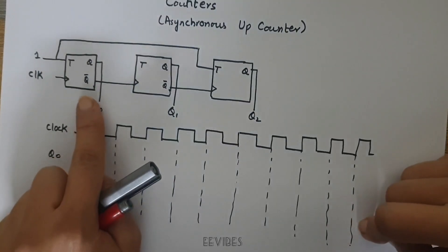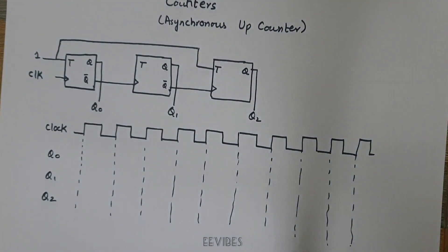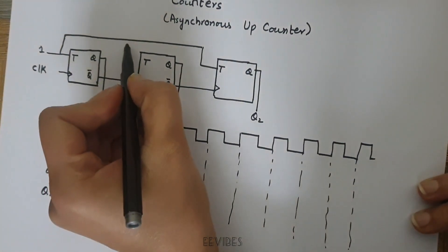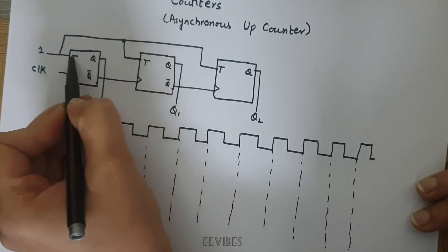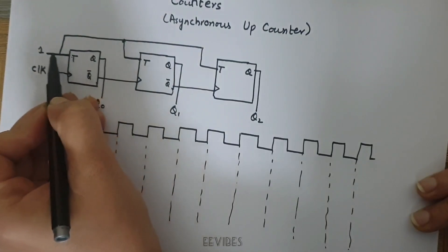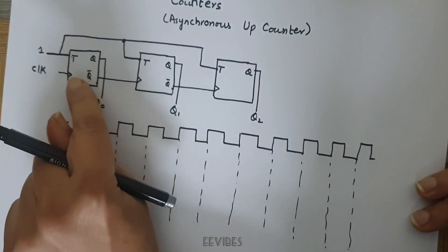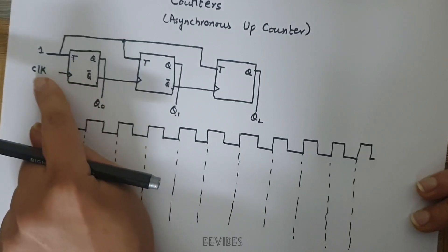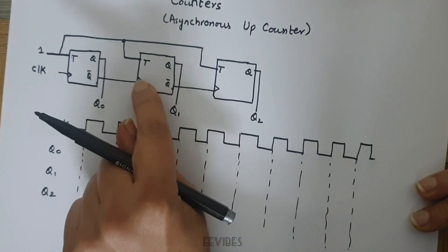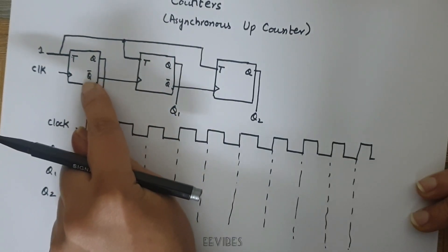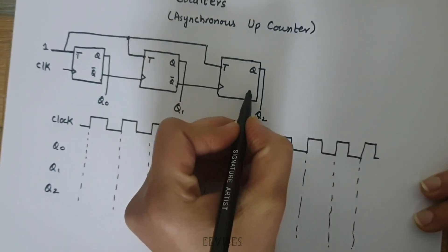If you look at the design, you can see that all T inputs of the flip-flops are connected to logic level one — this one, this one, and this one are all connected to logic value equal to one. Only the first flip-flop is being driven by the clock input signal, and the rest of the flip-flops' clock signals are getting their input from the Q-complement of the previous stage.